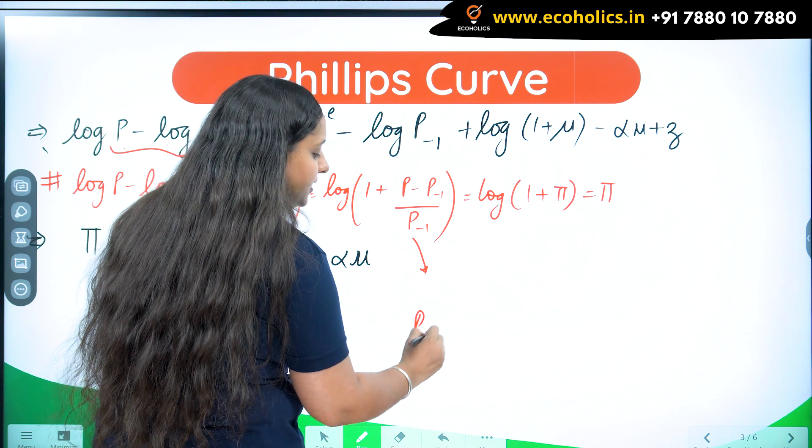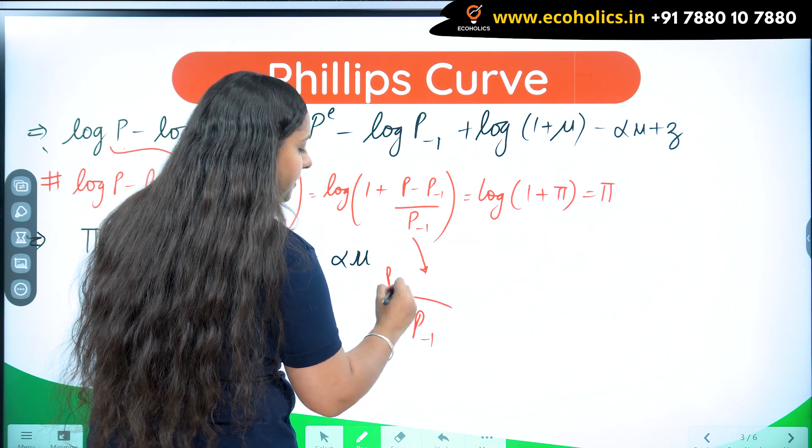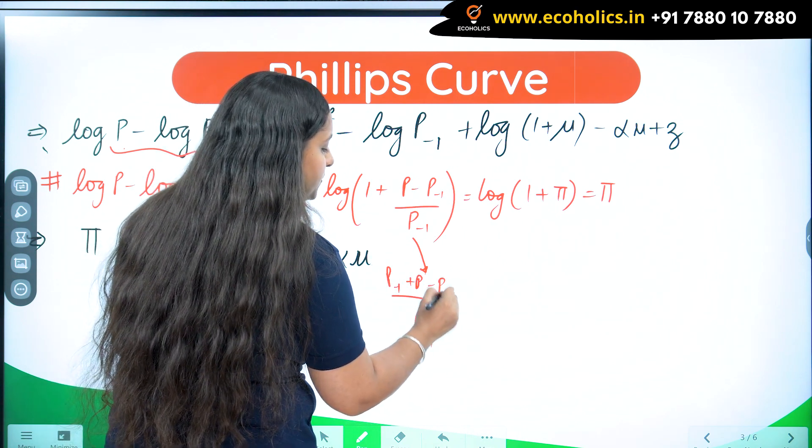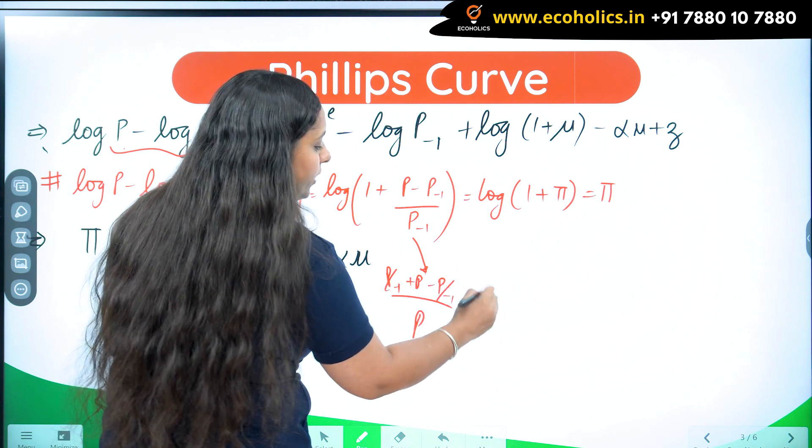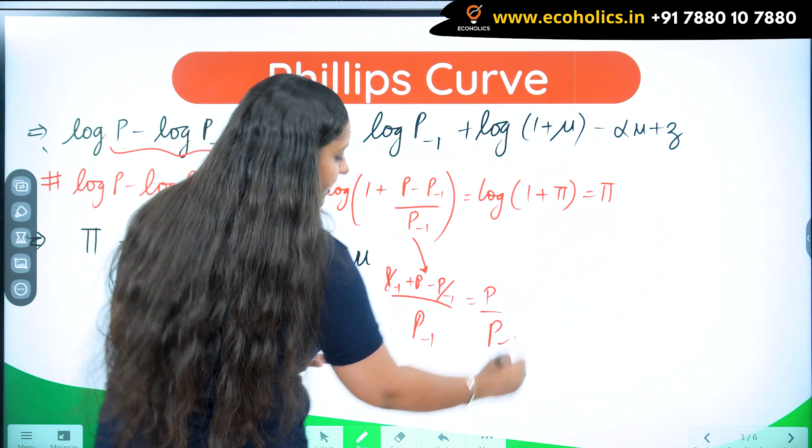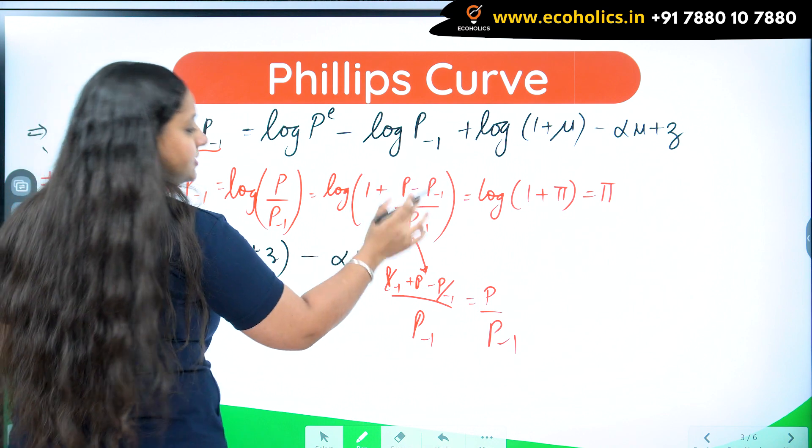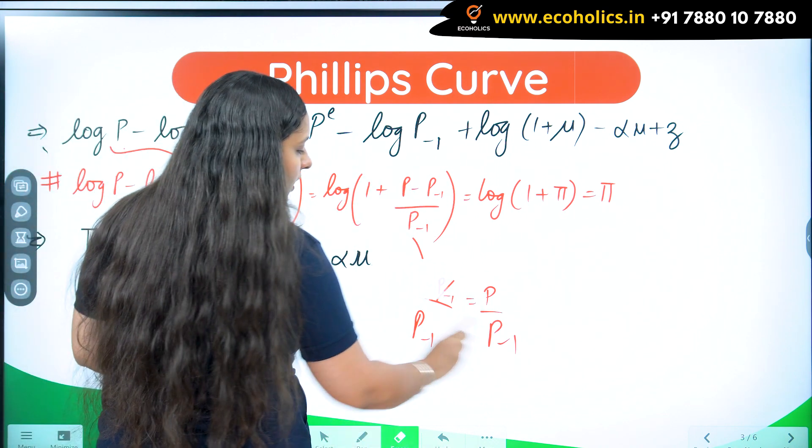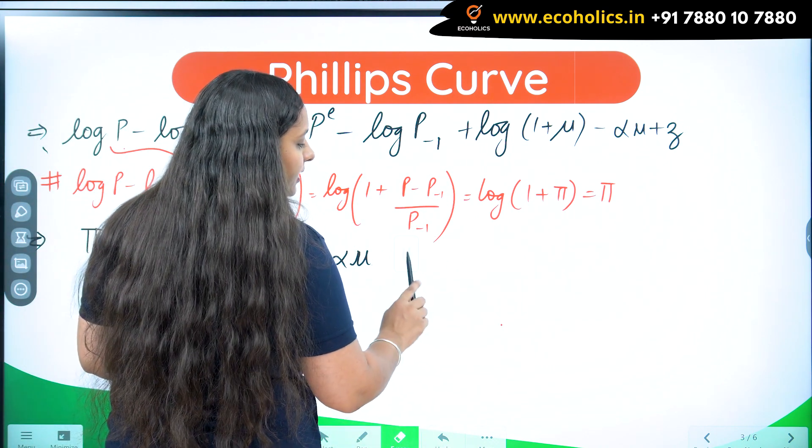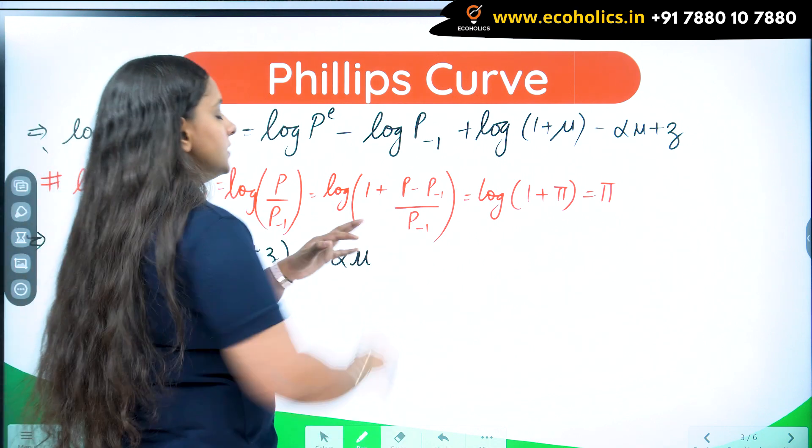I can write P upon P minus 1 in this form. P minus 1 LCM, P minus 1 plus P minus P minus 1 cancel out and I am left with just the same thing. I have written this in another form, just done a little algebraic manipulation.